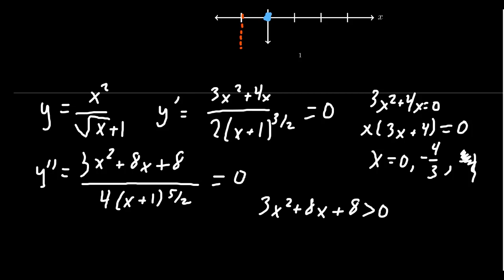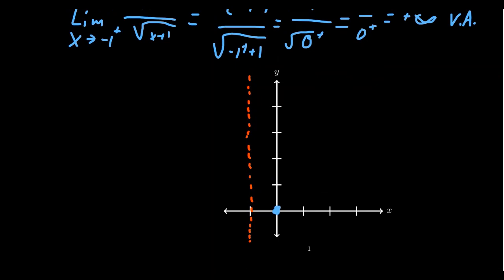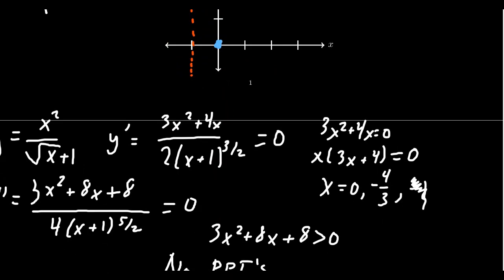With no points of inflection, the graph is either always concave up or always concave down. Building our sign chart: the second derivative never equals zero, so we look at our single critical number at x equals 0. Note that negative 4/3 is outside the domain (which is negative 1 to infinity), so we only have the one critical number at 0.